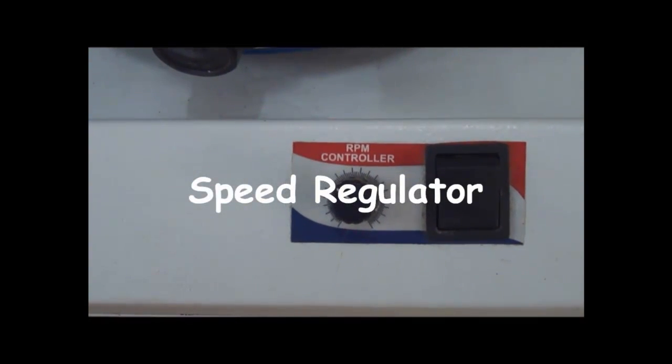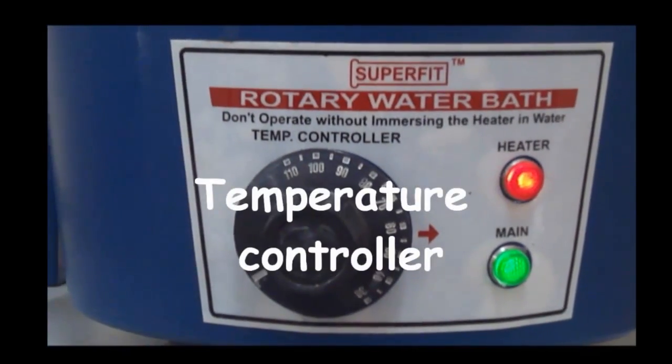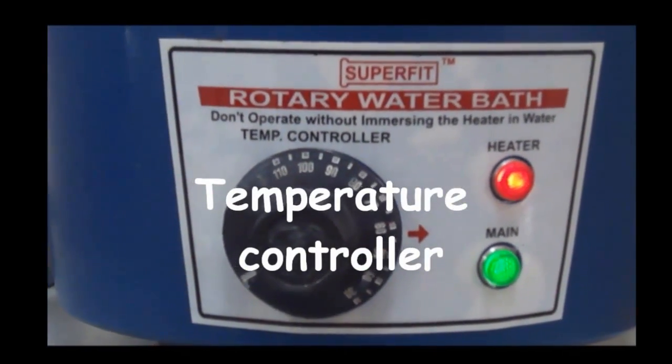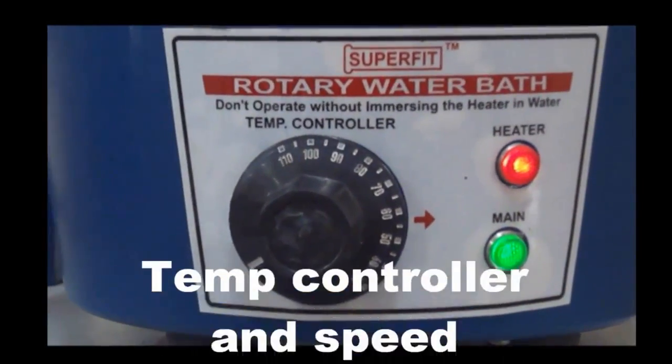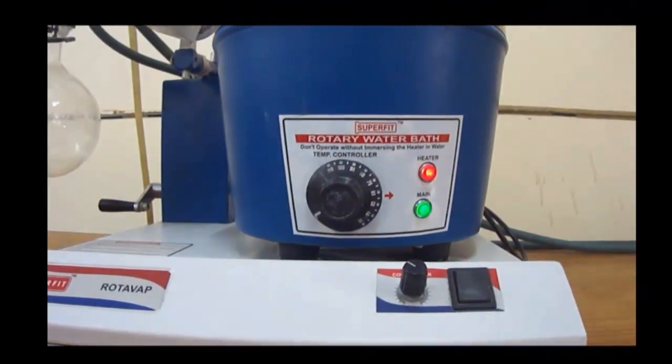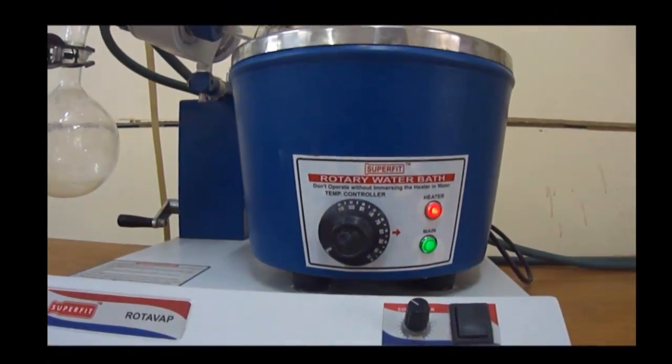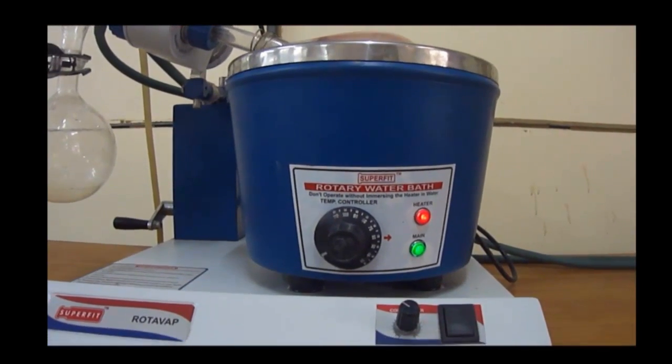The RPM controller switch acts as a speed regulator. The temperature controller knob is used to adjust the temperature of the water bath. Both temperature controller and speed regulator are present in the control panel which acts as a platform for the water bath.